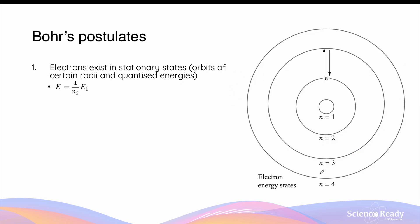In Bohr's atomic model, he has made three postulates. The first postulate states that electrons exist in what he called stationary states. This refers to orbits of a certain radius and quantized energy level. The energy of a particular orbit is given by E equals 1 over N squared E1, where E1 is the energy of the first orbit, that's the one closest to the nucleus, N equals 1. N is an integer that denotes which orbit it is in the atom. The first orbit is N equals 1, the second orbit is N equals 2, and so on.